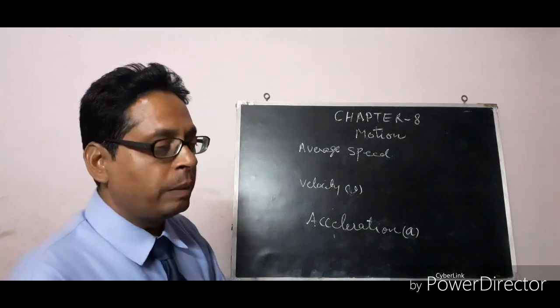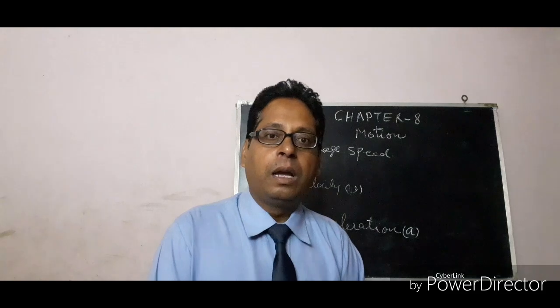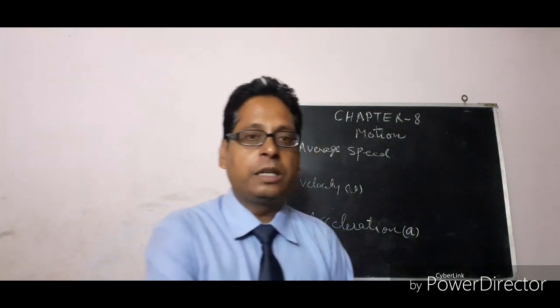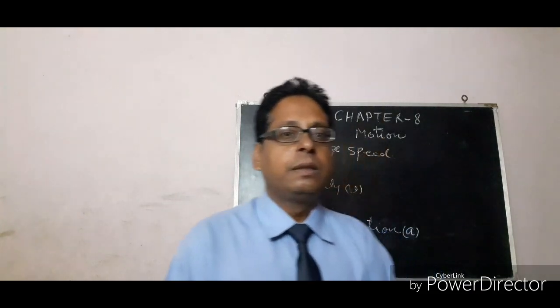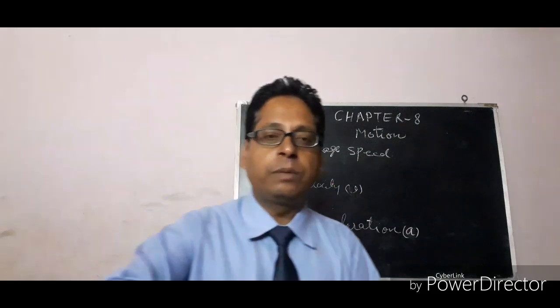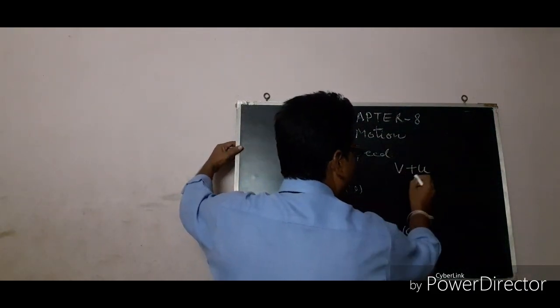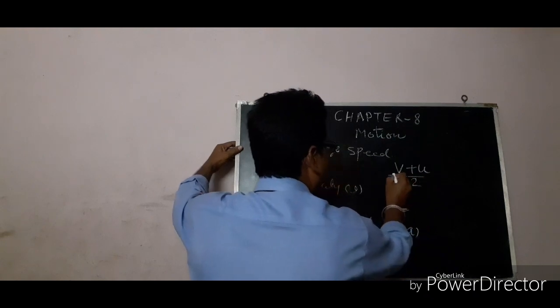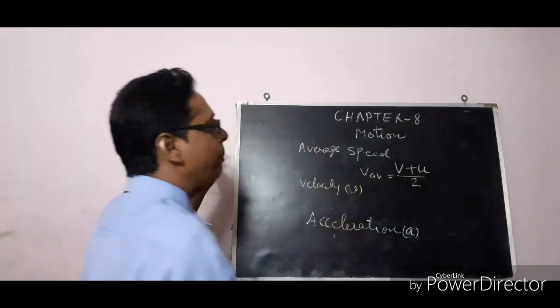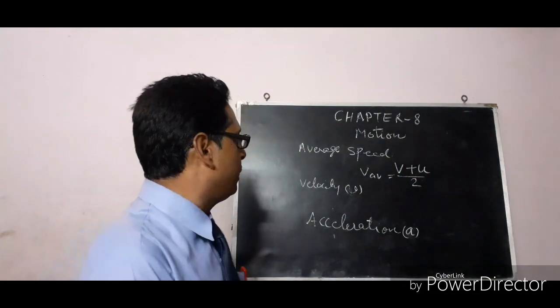Suppose one object is moving with a speed of 20 meters per second and a second object is also moving with a speed of 20 meters per second. To find the average speed, we add both speeds and divide by 2. So if one speed is V and the second is U, then average speed equals V plus U upon T.